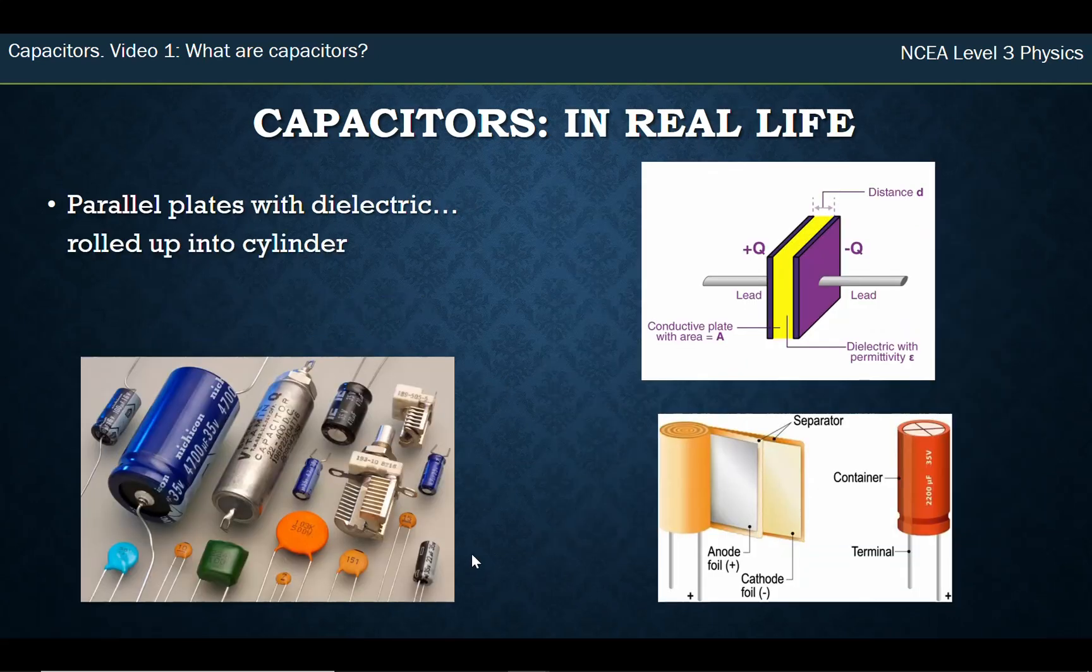In real life you see these capacitors here. Most of them look cylindrically shaped, but I've shown you something with two metal plates which kind of looks like a rectangle. How are these the same thing? In real life what we do is we have the parallel plates with the dielectric and they're rolled up into a cylinder. You can see an unrolled diagram here. This is how you get these shapes.